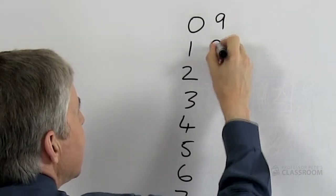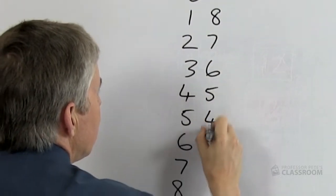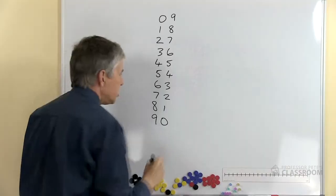So there's nine, eight, seven, six, five, four, three, two, one, zero.